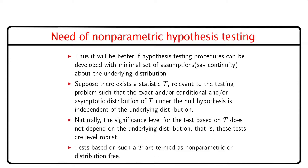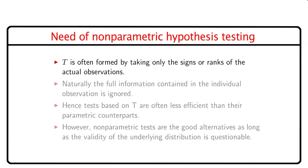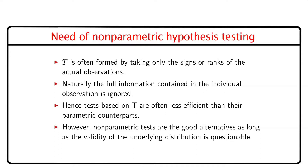Tests based on such a t are termed as non-parametric or distribution free. T is often formed by taking only the signs or ranks of the actual observations. Naturally, the full information contained in the individual observation is ignored. Hence, tests based on t are often less efficient than their parametric counterparts. However, non-parametric tests are good alternatives as long as the validity of the underlying distribution is questionable.